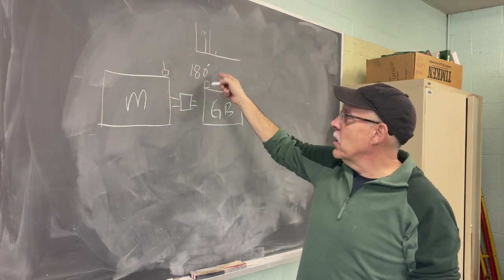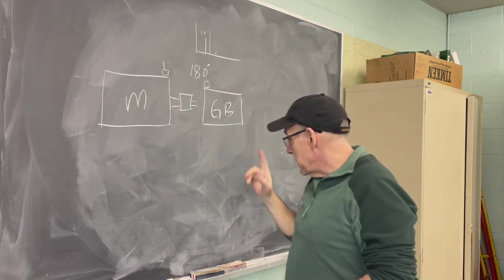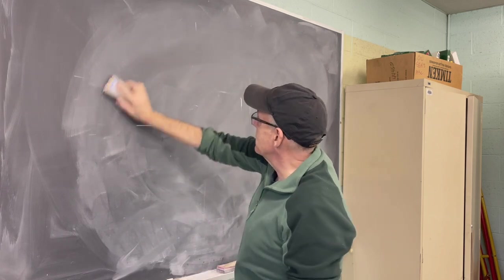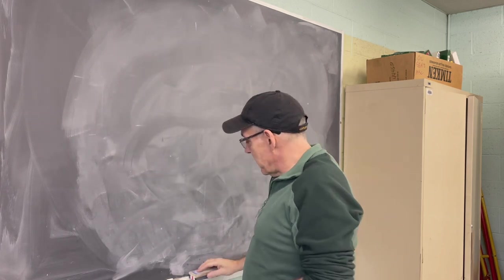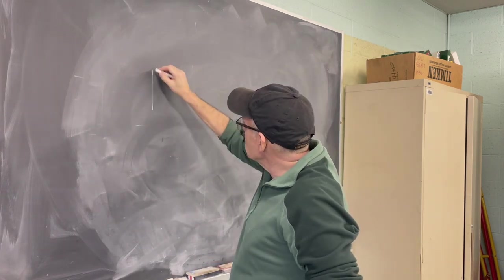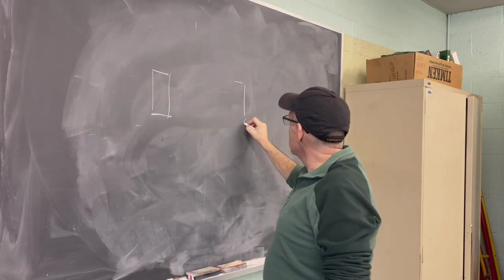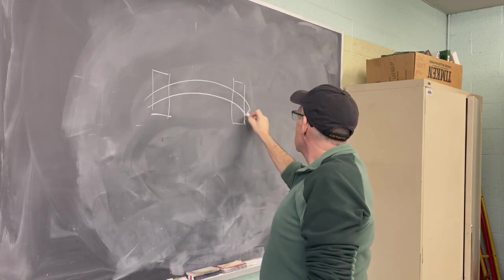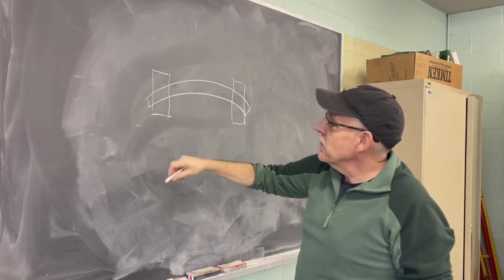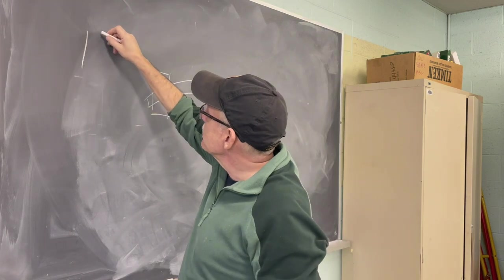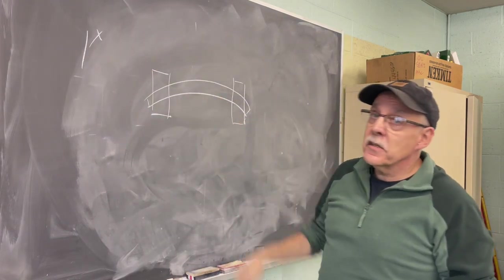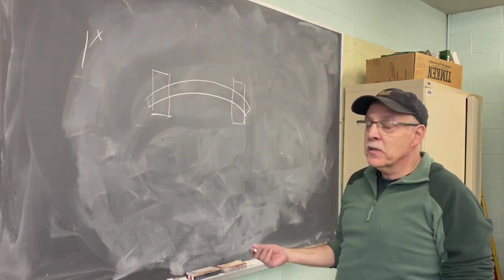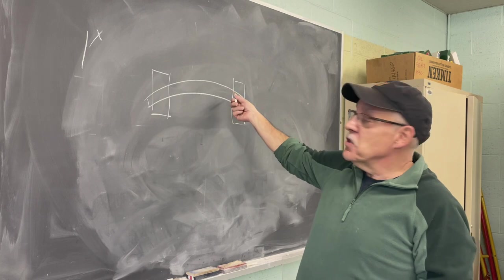Misalignment always happens at 180 degrees. Now here's another one that's a little harder to get your head around — a bent shaft. Here's a bearing on one side and a bearing on the other side with the bent shaft through them. A bent shaft shows up at one times, same as imbalance and misalignment, so we use phase to differentiate.